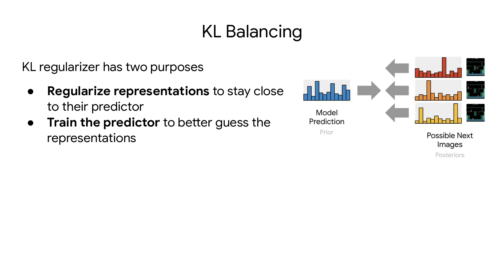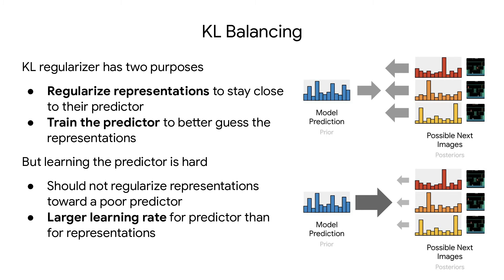The training objective of the world model contains a KL regularizer that brings the image representations and their predictions closer together. This has two purposes: first, it regularizes the representations to not contain more information than necessary; and second, it trains the predictor. But learning the predictor is hard, and we should not regularize our representations to be close to a poorly trained predictor. Therefore, we use a larger learning rate for the predictor than for the representations. This is easy to implement using autodiff frameworks, and it is different and orthogonal to beta-variational autoencoders.